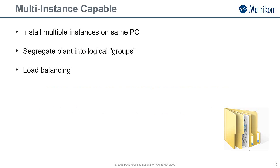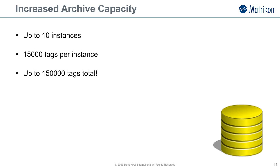First up, Desktop Historian is now a multi-instance capable product. This means we can install multiple instances of Desktop Historian on the one computer. You could use this functionality to segregate your plant into local areas, or maybe for load balancing. This also means a huge increase in the possible archived tag count. Previously, Desktop Historian was good to about 15,000 tags per install. In version 5.1, you can configure up to 10 instances with 15,000 tags per instance, which gives us a possible 150,000 total tag count.